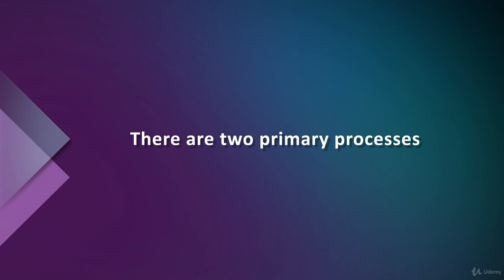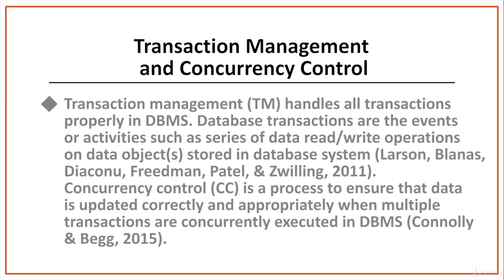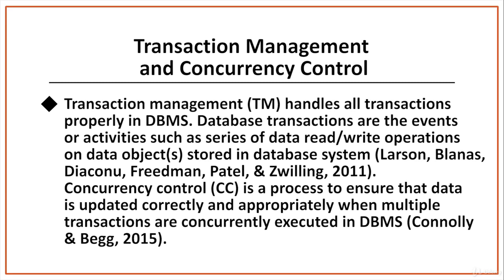There are two primary processes: one, transaction management (TM), and two, concurrency control (CC) in database management systems. Transaction management handles all transactions properly in DBMS. Database transactions are the events or activities such as a series of data read or write operations on data objects stored in the database system. Concurrency control is a process to ensure that data is updated correctly and appropriately when multiple transactions are concurrently executed in DBMS.